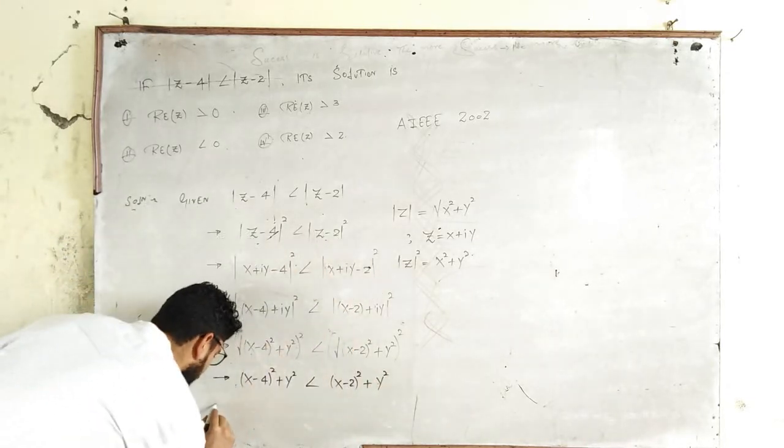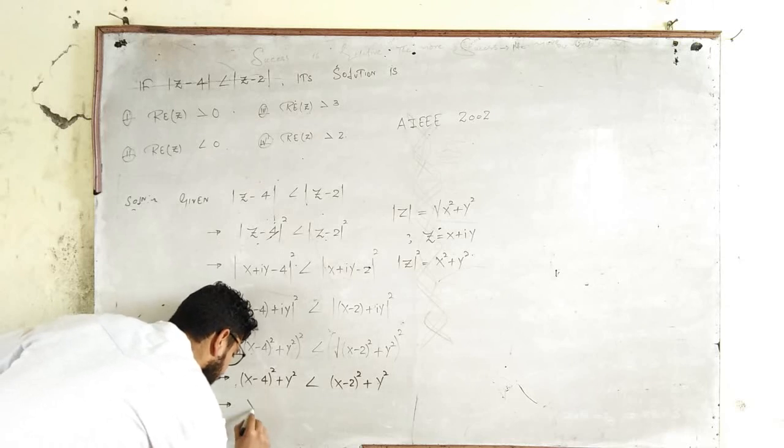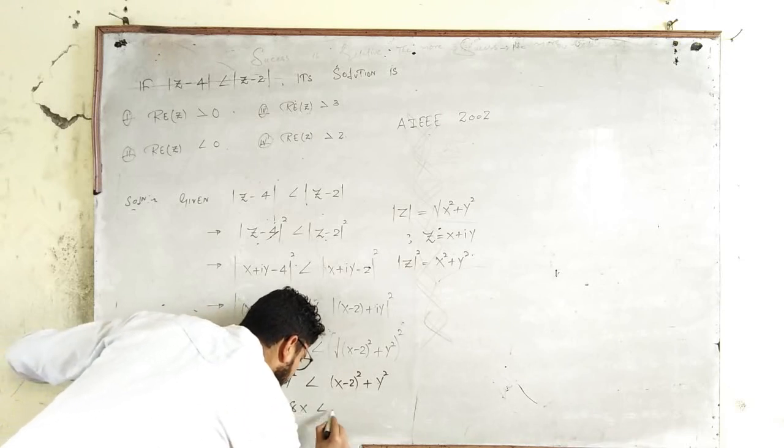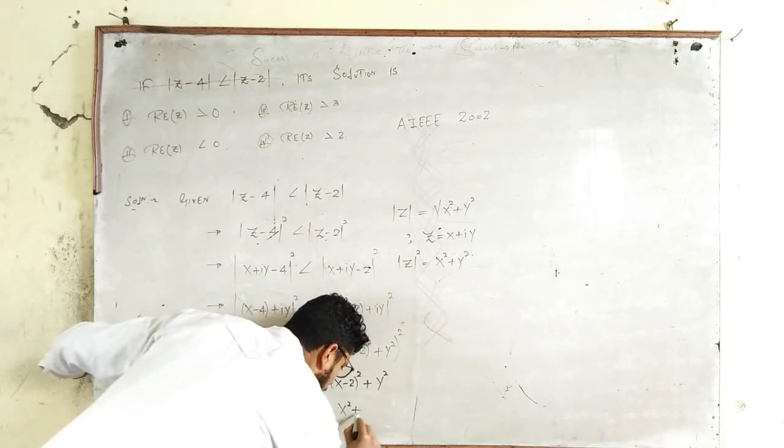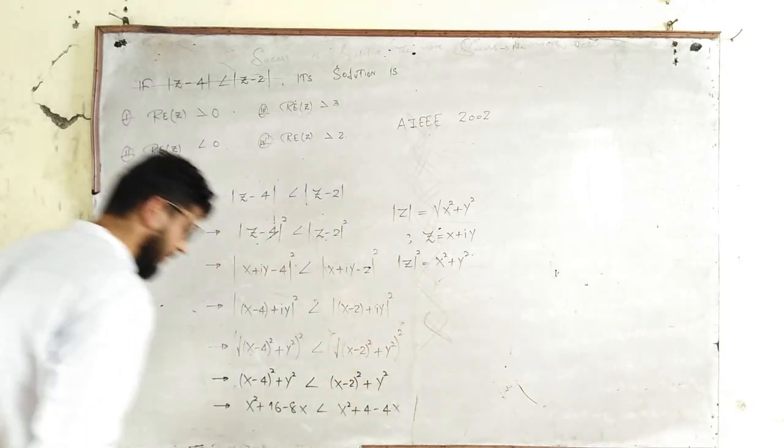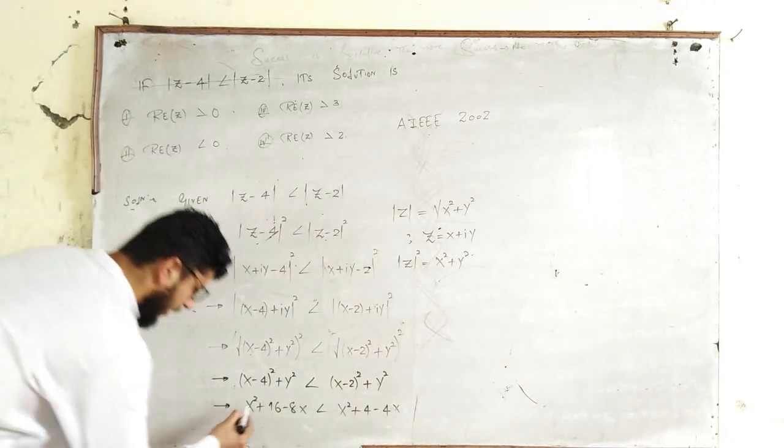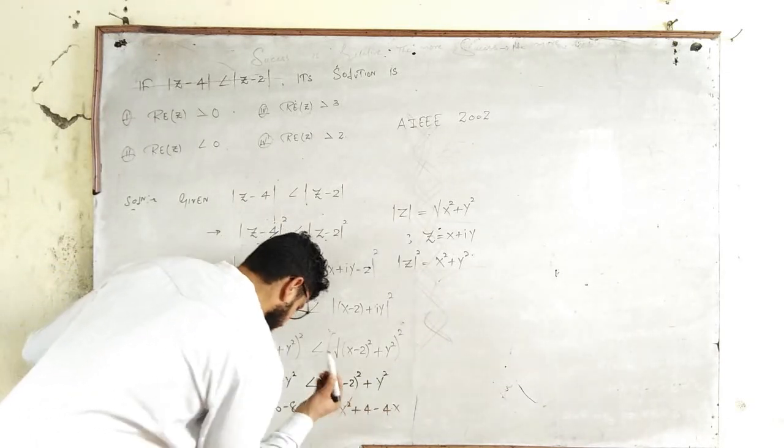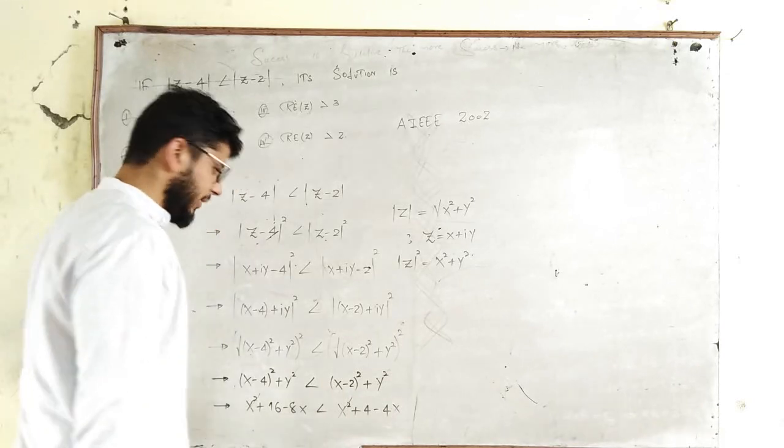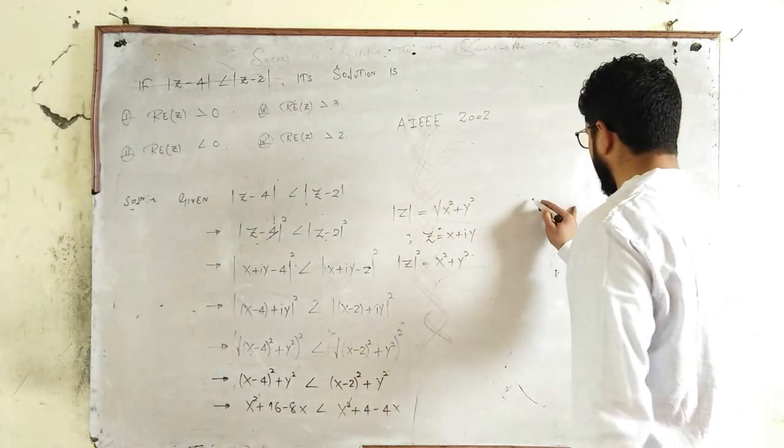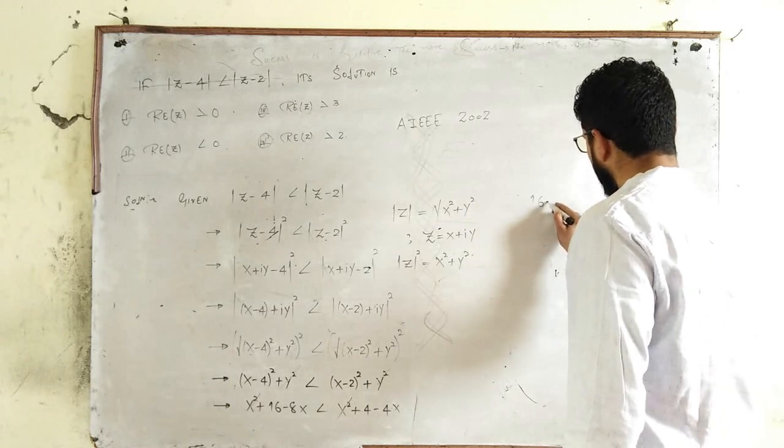Now y² and y² will directly cancel. We'll expand this: you will get x² + 16 - 8x less than x² + 4 - 4x. Now x² and x² will again cancel.